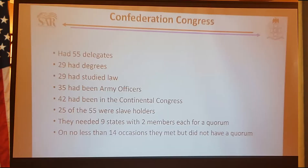We had Continental Congresses during the war, the Confederation Congress from about 1779 to 1786 or so, and then a Constitutional Congress in 1787 and 1789. Your average Confederation Congress had 55 delegates—35 of these were army officers who knew deprivation, knew how to starve, knew what it was like not having any funds to keep troops alive.